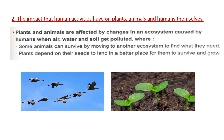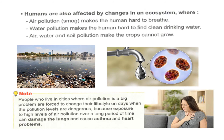The impact that human activities have on plants, animals, and humans themselves: plants and animals are affected by changes in an ecosystem caused by humans. When air, water, and soil get polluted, some animals can survive by moving to another ecosystem to find what they need. Plants depend on their seeds to land in a better place for them to survive and grow.